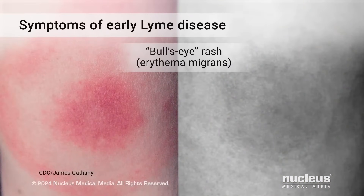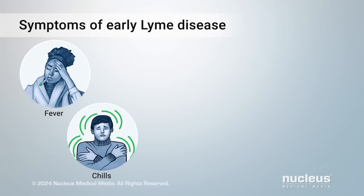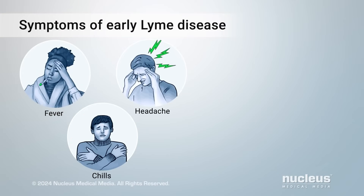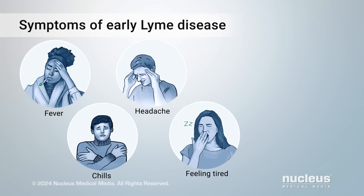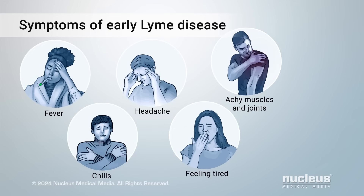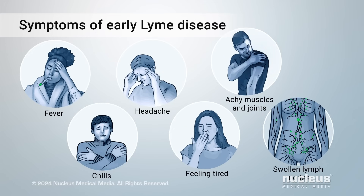A common symptom of early Lyme disease is the erythema migrans rash. While it may have a bullseye shape, it often doesn't. Other symptoms may include fever, chills, headache, feeling tired, achy muscles and joints, and swollen lymph nodes.